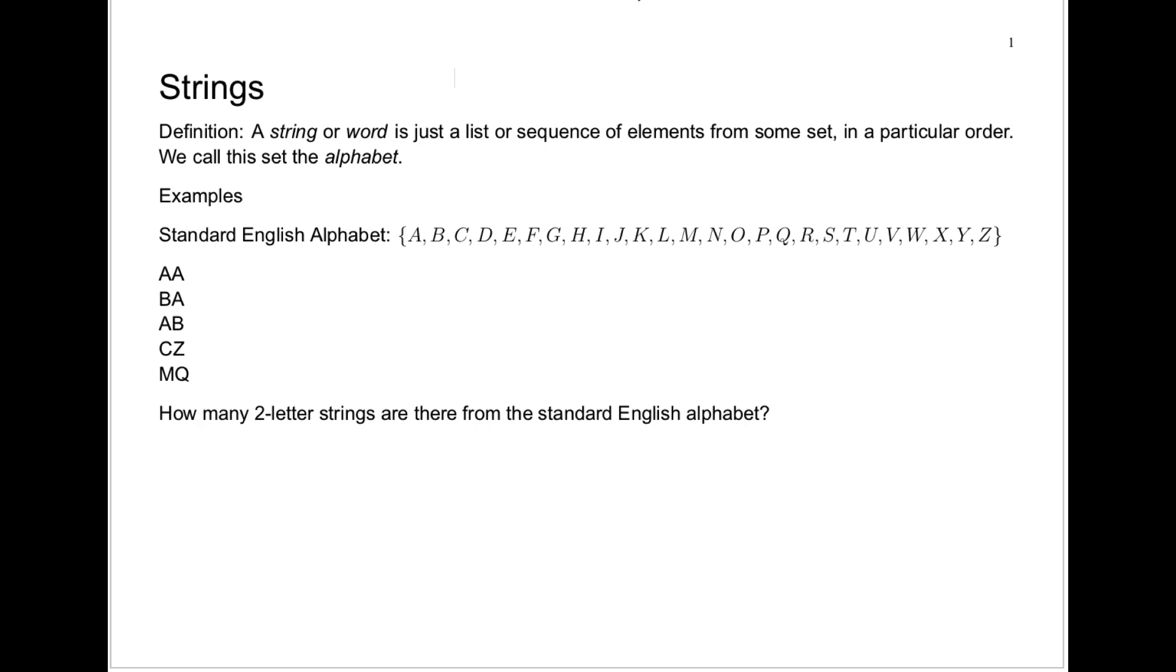Since we're calling it our alphabet anyway, let's start with an example that involves the standard English alphabet. When I say the standard English alphabet, I mean this set, the set that contains the letters A, B, C, D, E, F, G, H, I, J, K, L, M, N, O, P, Q, R, S, T, U, V, W, X, Y, and Z. If you check that carefully, you'll see there are exactly 26 members of our alphabet.